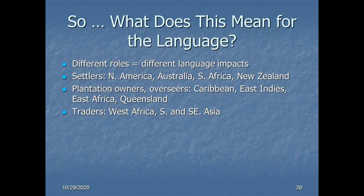What does all of this have to do with the English language? Well, let's break it down. Where the British went, there were different roles that English speakers played in the different areas where they colonized — and different roles equate to different impacts on the language. In North America, Australia, South Africa, and New Zealand, they went as settlers. In the Caribbean, the East Indies, East Africa, and Queensland, they went as plantation owners or overseers. In West Africa and Southeast Asia, they tended to go as traders. Sending people in as settlers involves mass movements of populations; plantation owners, a little less so; and traders, even less still.